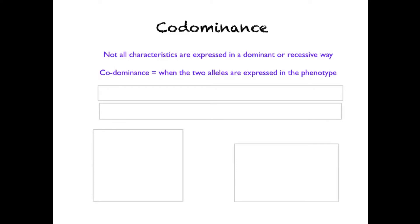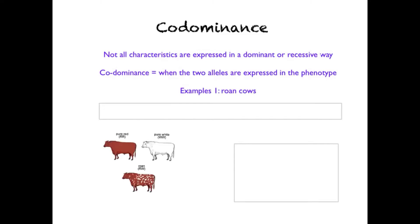An example of co-dominance is the roan cow. As we can see in the picture, we have a red cow crossed with a white cow, and all of the offspring have the genotype RW — they have one red and one white allele from each parent. So instead of the cow being either red or white, it actually shows both phenotypes.